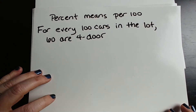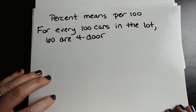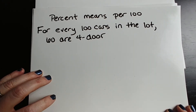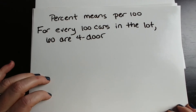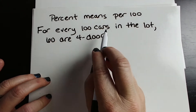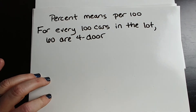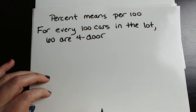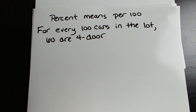It says 60%, so we need to know: percent means per hundred. Super important to remember this — percent means per hundred. So in this situation, it simply means that for every 100 cars in the lot, 60 of them are 4-door. That's what 60% means.